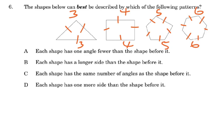So now let us eliminate to find our answer. Each shape has one angle fewer than the shape before it. The term fewer would make this statement incorrect. So A is out. Each shape has a longer side than the shape before it. We don't know the length of each side. So that is out. Each shape has the same number of angles as the shape before it. Each shape has one more side than the shape before it. One more than three is four. One more than four is five. One more than five is six. So our answer is D.